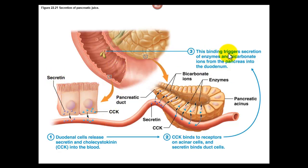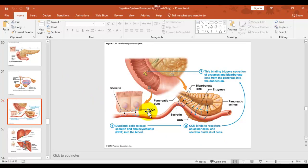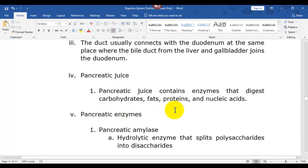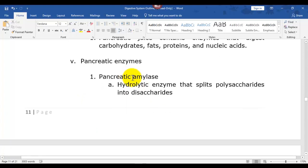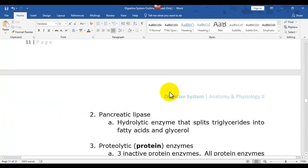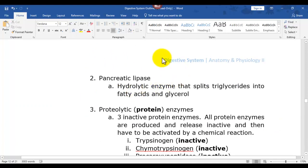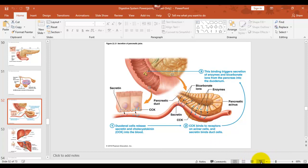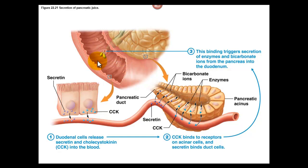Binding triggers secretion of enzymes and bicarbonate ions. Secretin is a hormone that controls sodium bicarbonate release. Now the pancreatic enzymes: pancreatic amylase splits polysaccharides into disaccharides — the same function as in saliva but now it's pancreatic amylase. Pancreatic lipase splits triglycerides into fatty acids and glycerol so they can be absorbed. There are three inactive protein enzymes produced by the pancreas.